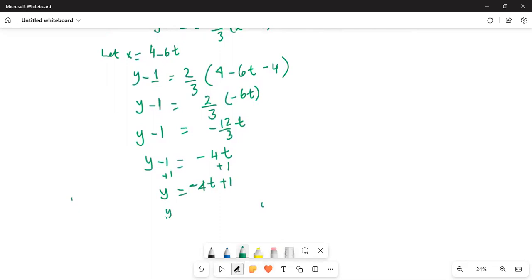So the final parametric form is y equal to 1 minus 4t. Now remember x equal to 4 minus 6t, and I already assumed that x is equal to 4 minus 6t.